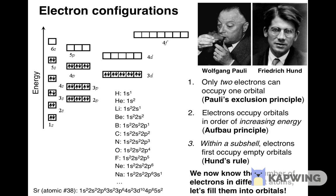We should note the following self-checks to verify whether an electron configuration is correct. First, the superscript indicating the number of electrons in a subshell can be no more than 2 for an s subshell, no more than 6 for a p subshell (3 orbitals × 2 electrons each), no more than 10 for a d subshell (5 orbitals × 2 electrons each), and no more than 14 for an f subshell (7 orbitals × 2 electrons each). Second, the sum of all superscripts in an electron configuration must equal the atomic number of the element, because the total number of electrons in a neutral atom must equal its atomic number, regardless of how the electrons are distributed among orbitals.